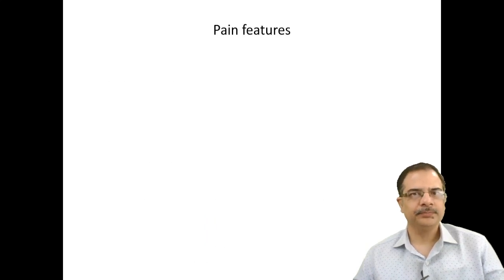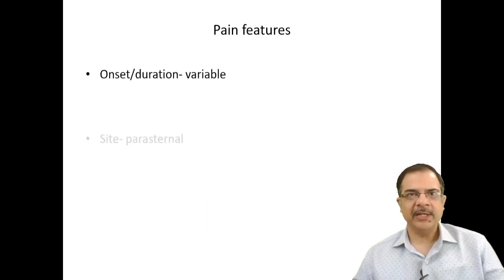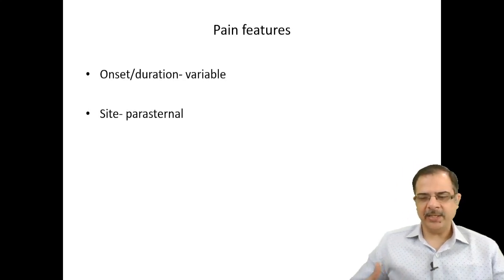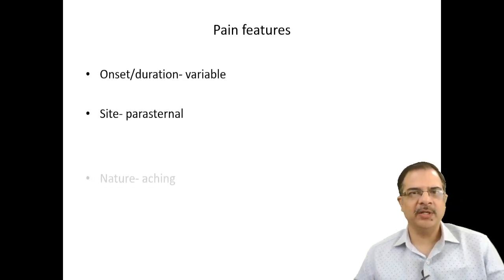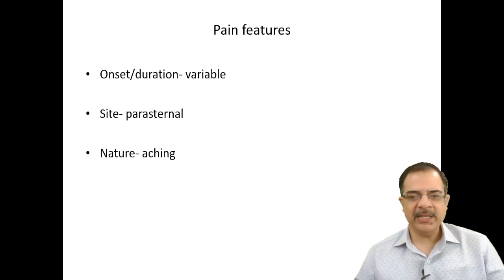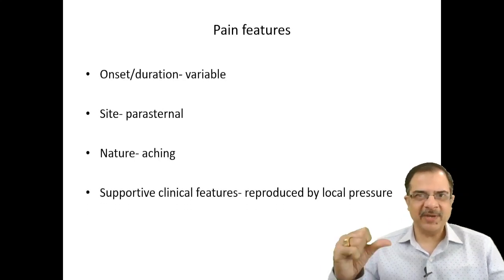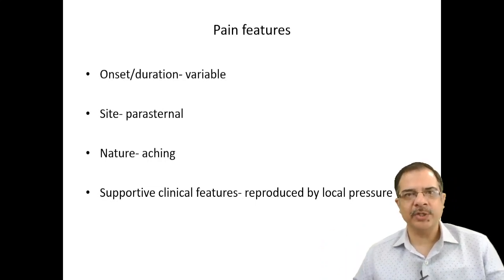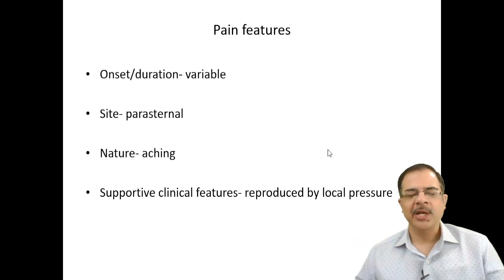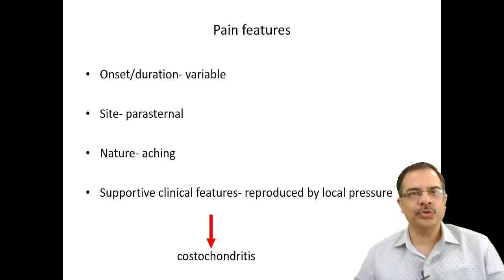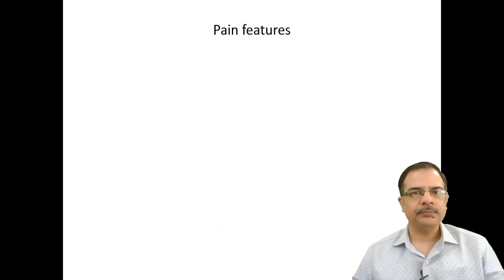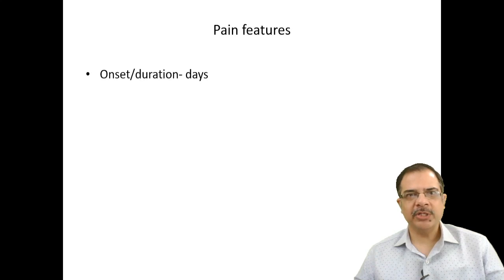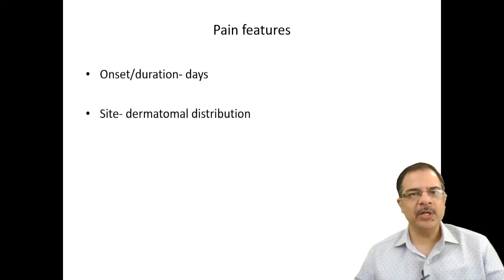Pain with variable onset and duration, parasternal — slightly away from the sternum — aching in nature, where pressing the area reproduces the pain. Whenever pain is reproduced by local pressure, it is musculoskeletal — that is costochondritis.